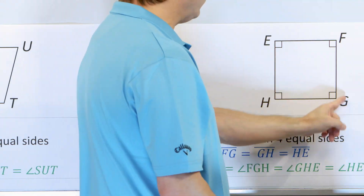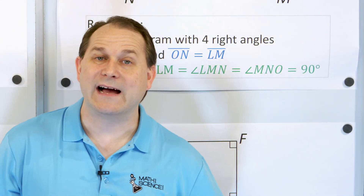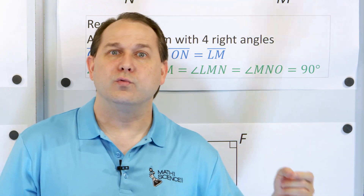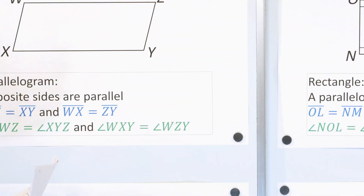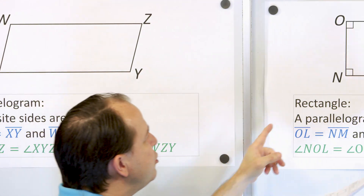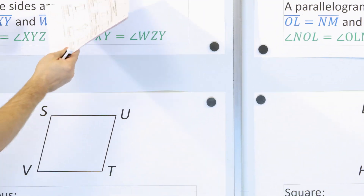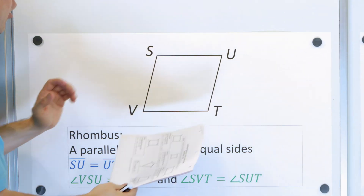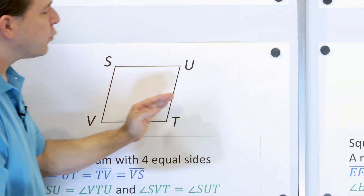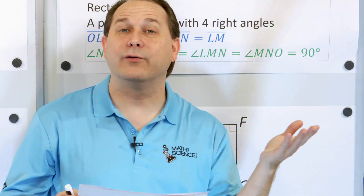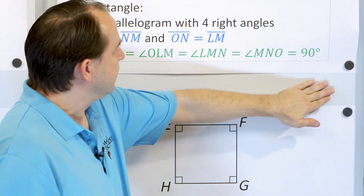A square has four equal sides and four right angles. If you take a rhombus and give it 90-degree angles in all the corners, you get a square because you have equal sides. So from the top: we have a parallelogram — it's a slanted rectangle. When you make the angles 90 degrees, it becomes a rectangle. When you take a parallelogram and make all the sides equal, you get a rhombus. When you take a rhombus and give it 90-degree angles in all corners, you get a square.